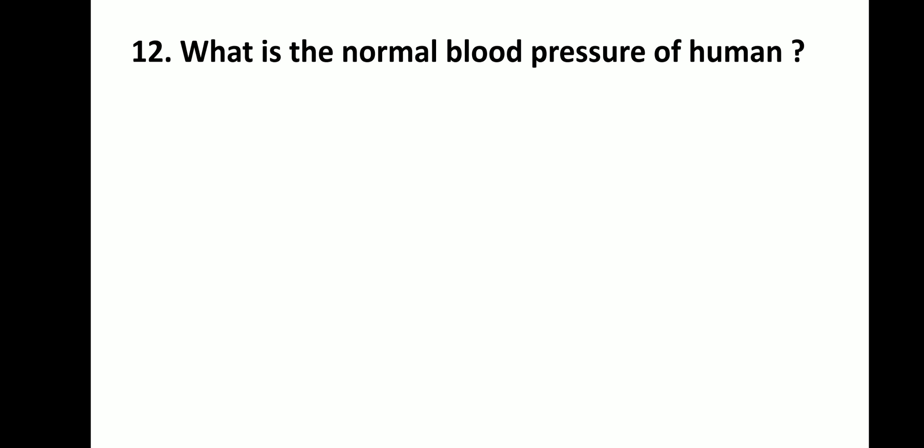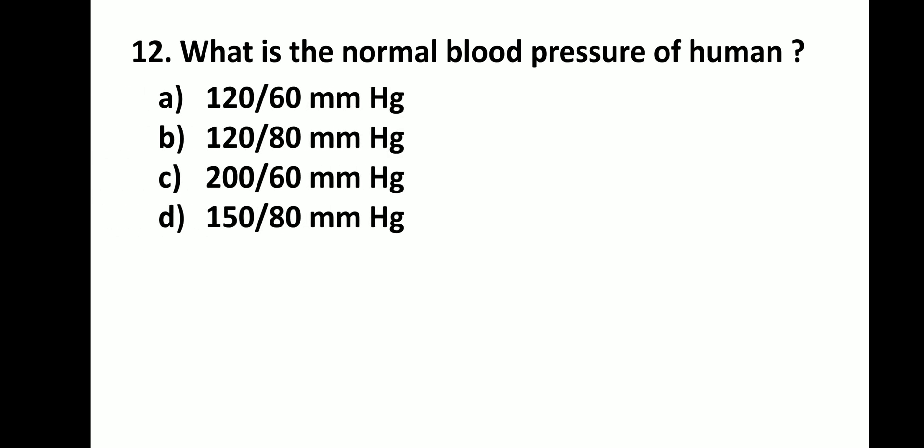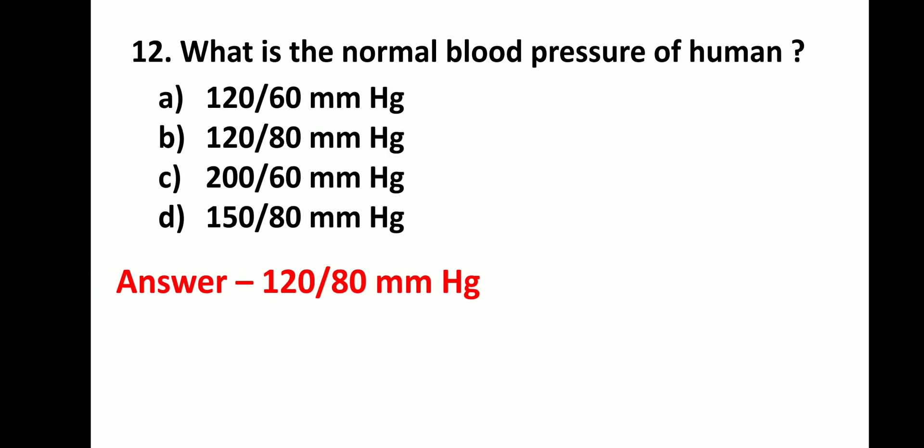What is the normal blood pressure of a human? It is 120/80 mmHg.